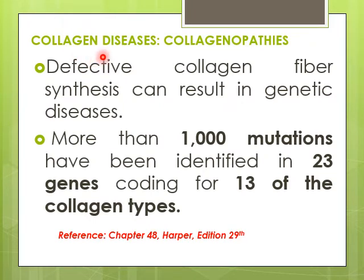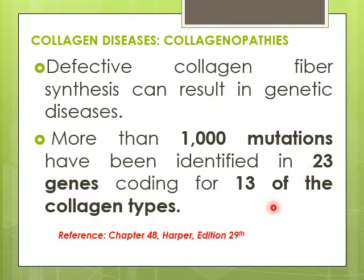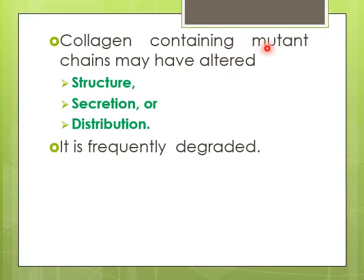The next part of the lecture covers collagen-associated disorders, also called collagenopathies. If the synthesis of collagen fiber is defective, it may result in a number of genetic disorders. More than 1,000 mutations have been observed in around 23 genes coding for 13 types of collagen. Mutant chains may show altered structure, secretion, or tissue distribution, and mostly undergo degradation.